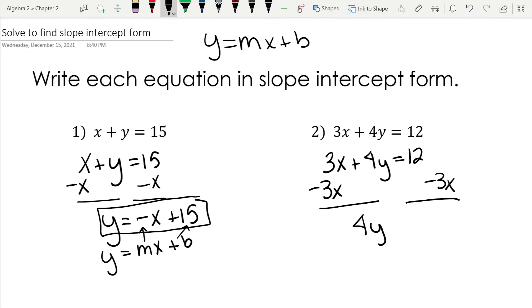That gives us 4y equals negative 3x plus 12. Now, I hope you noticed that I put negative 3x first because I wanted to match our slope-intercept form. But we still have a problem because y isn't by itself. Whenever I have a number next to a letter, it means to multiply. So the opposite of multiplying is dividing. And we're going to divide each piece by 4.